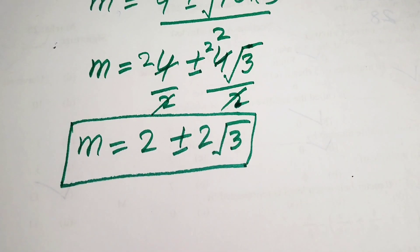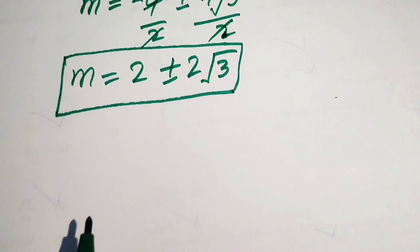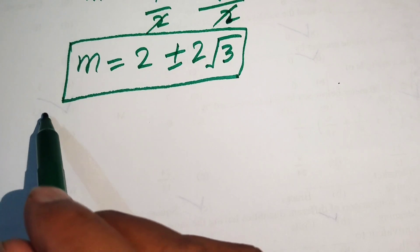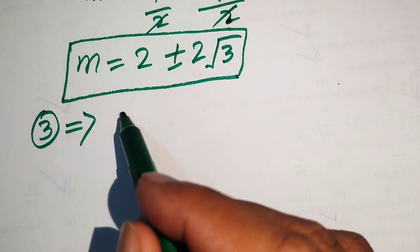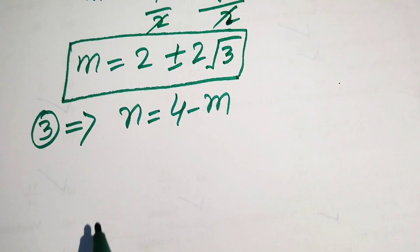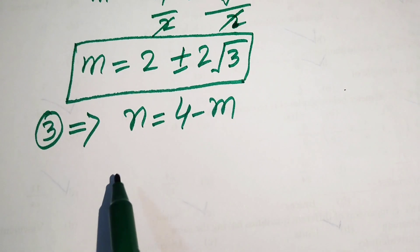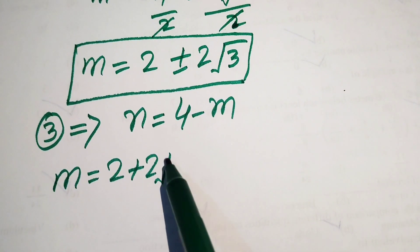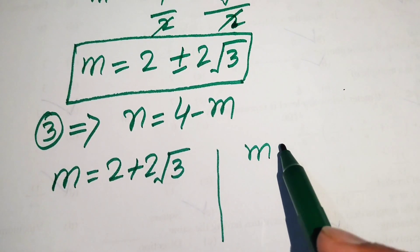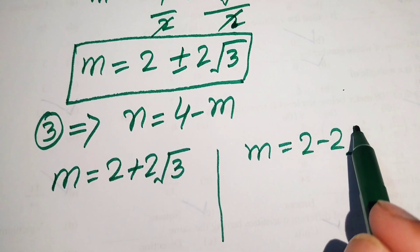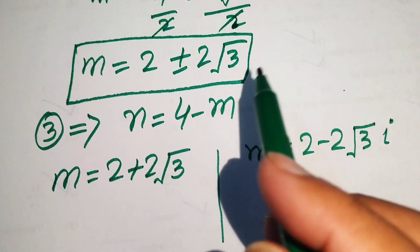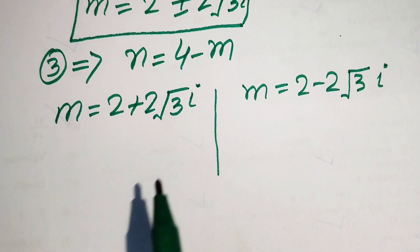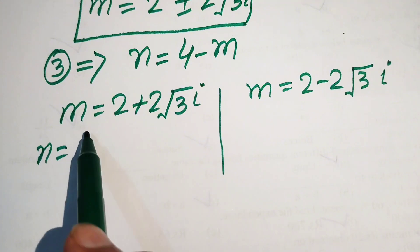These are the two values of m. Now we find the values of n using equation number three, n equals 4 minus m. The two values of m are: m equals 2 plus 2 square root of 3 iota (positive value) and m equals 2 minus 2 square root of 3 iota (negative value).